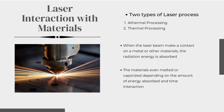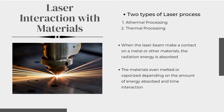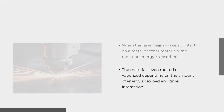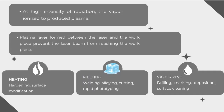Laser interaction with materials. Two types of laser processes: thermal processing and non-thermal processing. When the laser beam makes contact on a metal or other material, the radiation energy is absorbed. The material can be melted or vaporized depending on the amount of energy absorbed and interaction time. At high intensity of radiation, the vapor ionizes to produce plasma. A plasma layer formed between the laser and the workpiece prevents the laser beam from reaching the workpiece. Heating leads to hardening and surface modification; melting leads to welding, alloying, cutting, and rapid prototyping; vaporizing leads to drilling, marking, deposition, and surface cleaning.